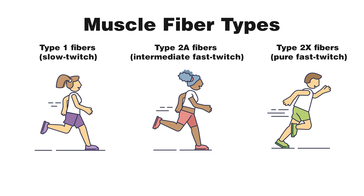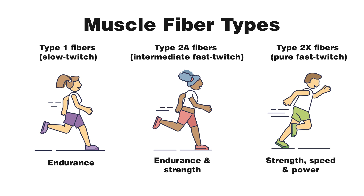On the left is someone running an endurance event like a marathon. The person in the middle is running a medium distance event. And on the right, the person is sprinting all out, trying to use as much strength, power, and speed as possible.